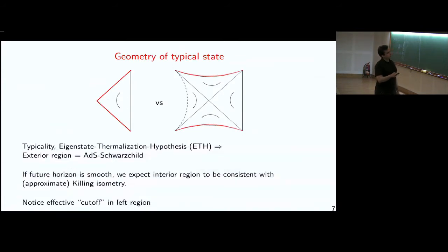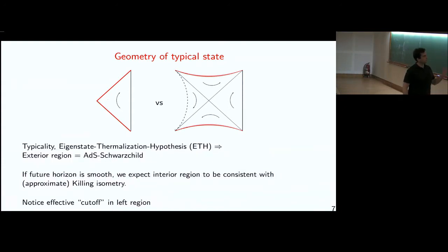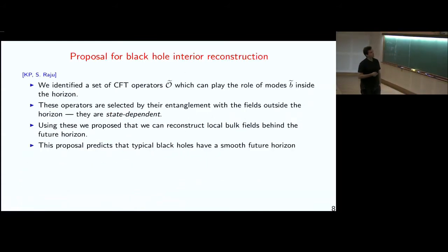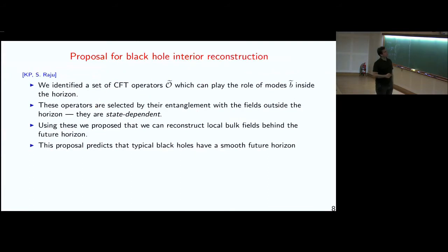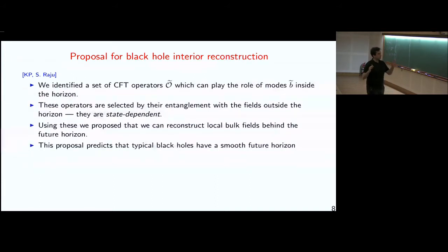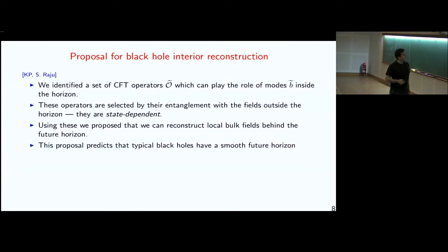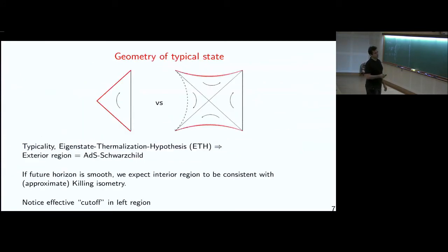I will start explaining what happens in the future wedge, and then try to see how we can reconstruct the remaining two regions. Regarding the future wedge, it's not so easy to reconstruct because of the argument of AMPS and Marolf and Polchinski. But in previous work with Suvrat, we made a proposal about how we could possibly identify a CFT operator O-tilde which plays the role of the modes behind the horizon. In that proposal, we basically identified this operator O-tilde in a way where it was selected by the entanglement with the fields outside the horizon — because of that, these are state-dependent operators; they depend on the microstate. Using these operators, we propose that we can reconstruct local bulk fields behind the future horizon in the future wedge. This proposal predicts that the typical black hole will have a smooth future horizon and a smooth future interior.